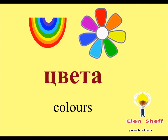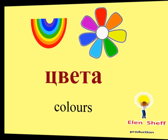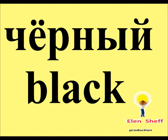Great. Now you know most of the words for food, vegetables and fruit. Now let's learn colors. Цвета. Чёр-ный. Чёрный.